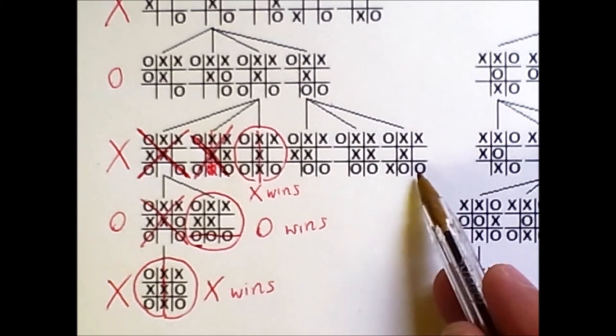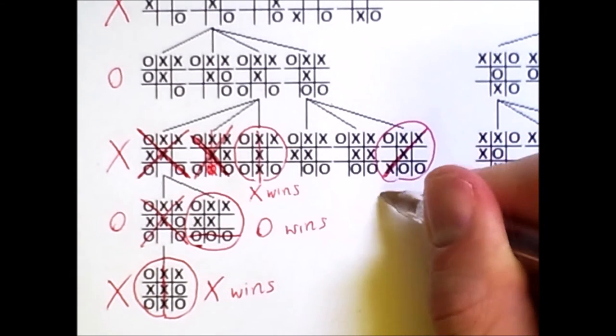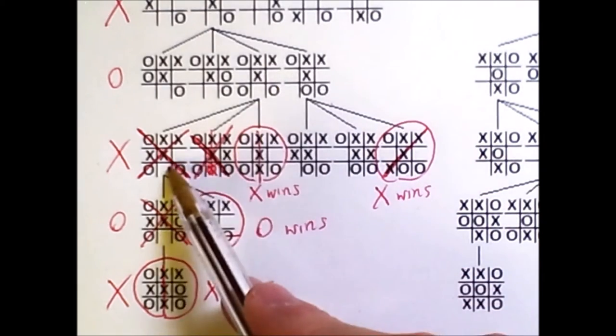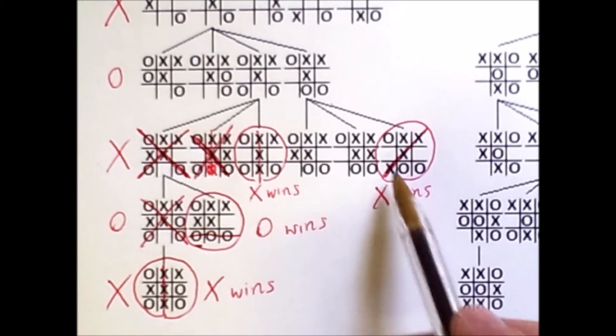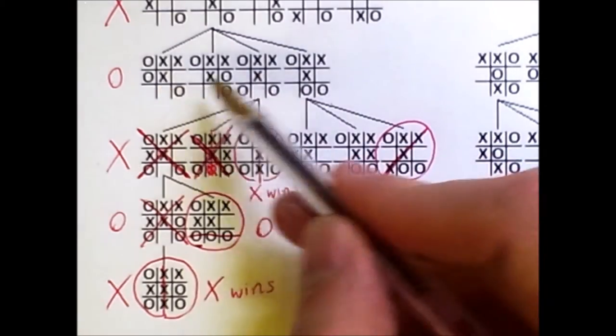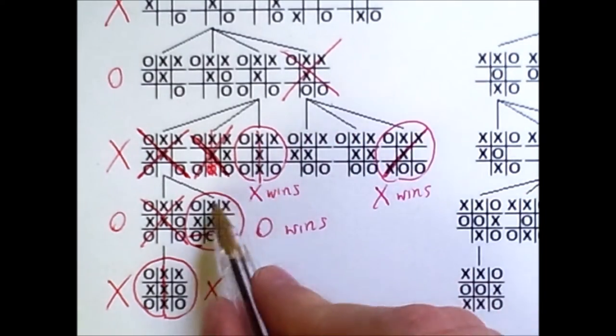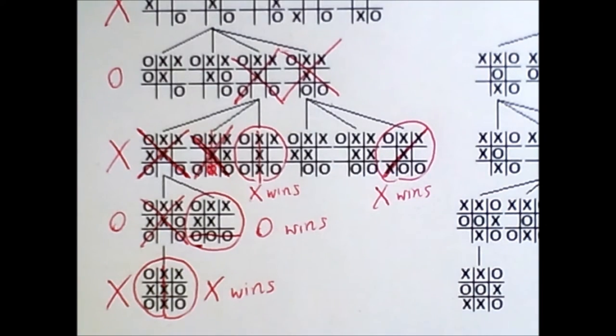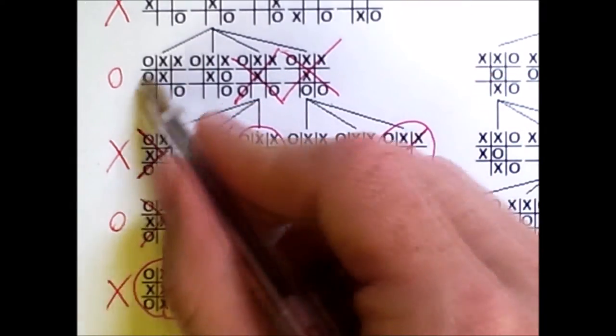X would also not make this move because O could play there and win as in this state. But X would make that move to win immediately. Therefore, because X is in control, this is a level where X wins. Similarly, at this level of the tree, X can play there and win immediately. So, in both this set of states and this set of states, X can win. Back up one level, O is making the decision here. X was guaranteed to win here, so O will not go that way. X is guaranteed to win here, so O will not go that way either.